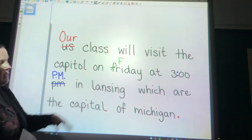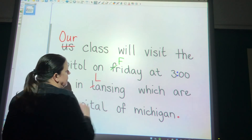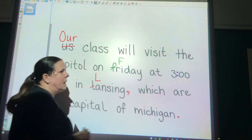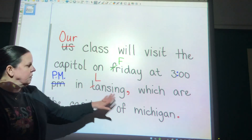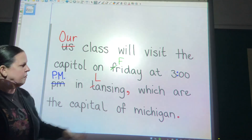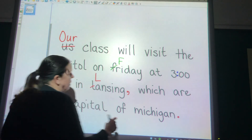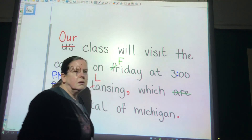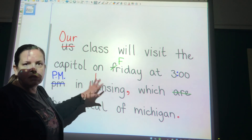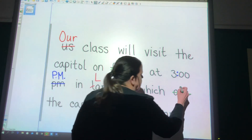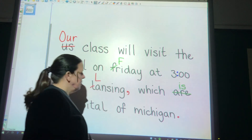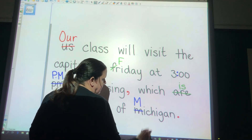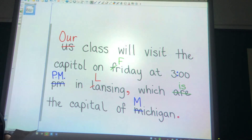In Lansing — Lansing is the name of that town, so we do need a capital. And then we're going to put a comma here because we're adding extra information about Lansing. We could have just ended our sentence there, but we're adding extra information. Which is the capital of Michigan — 'our' is plural, but we have a singular subject here, one city, Lansing, so we need the singular verb 'is': which is the capital of Michigan. Michigan is the name of that state, so we do want a capital there as well.